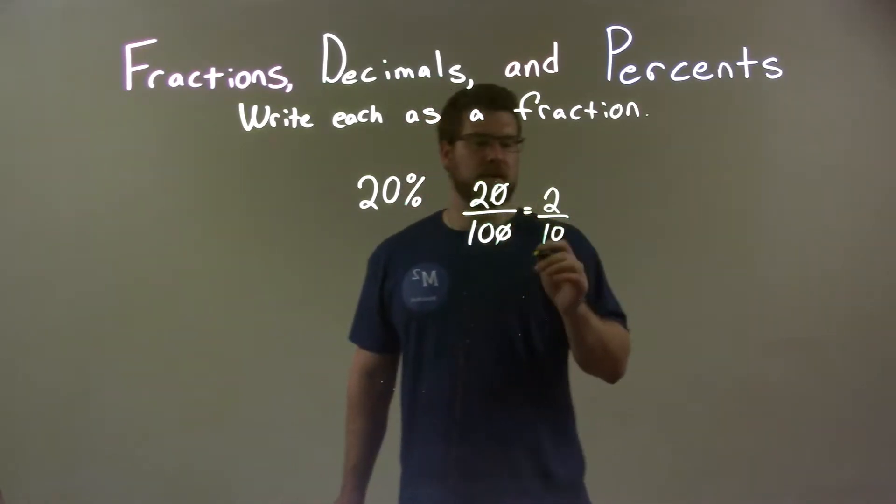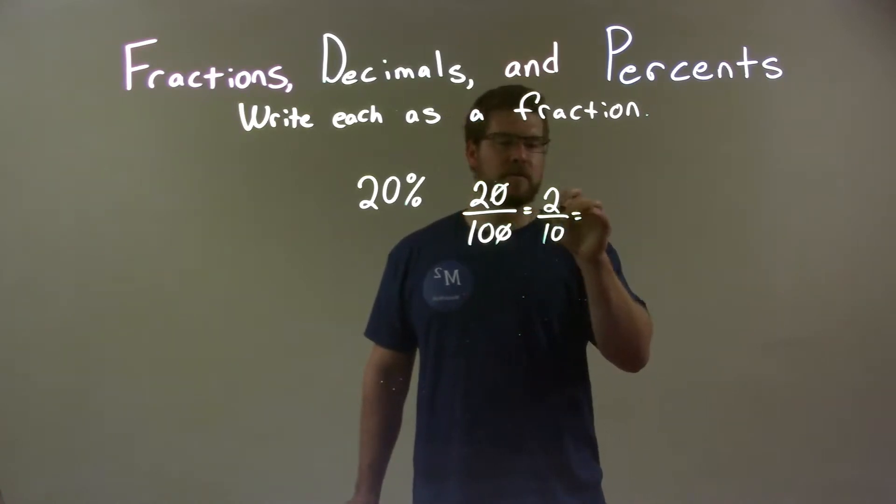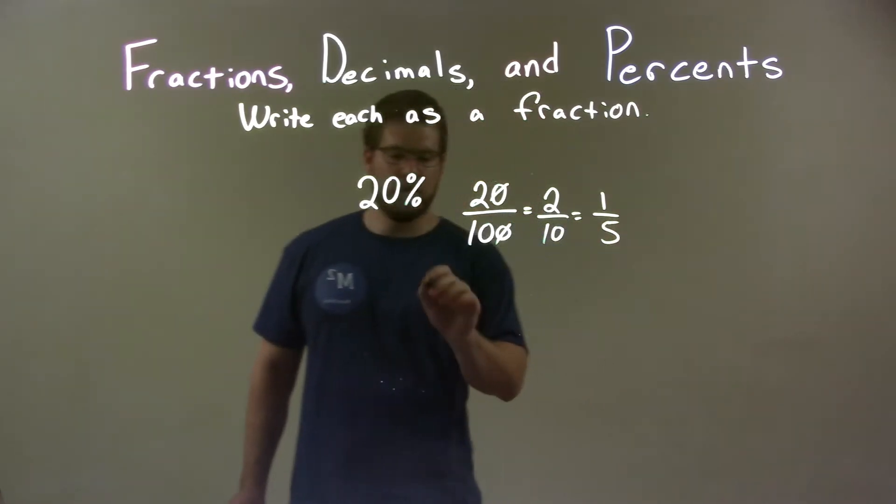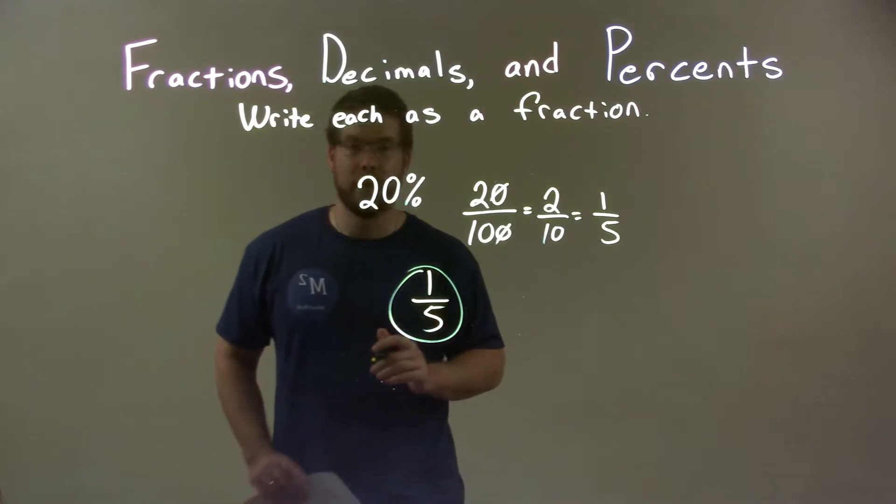Then, 2 goes into 10, right, 5 times. So, divide 2 by 2 is 1 and 2 goes into 10 5 times and so we have 1 fifth. So, 1 fifth is our final answer.